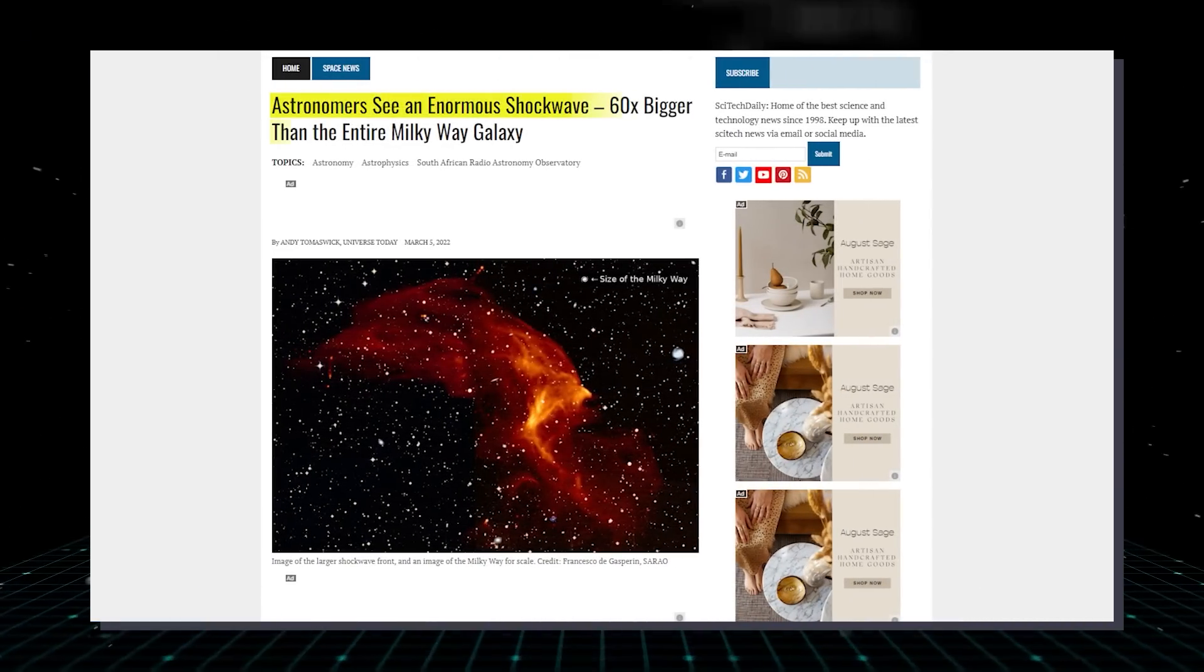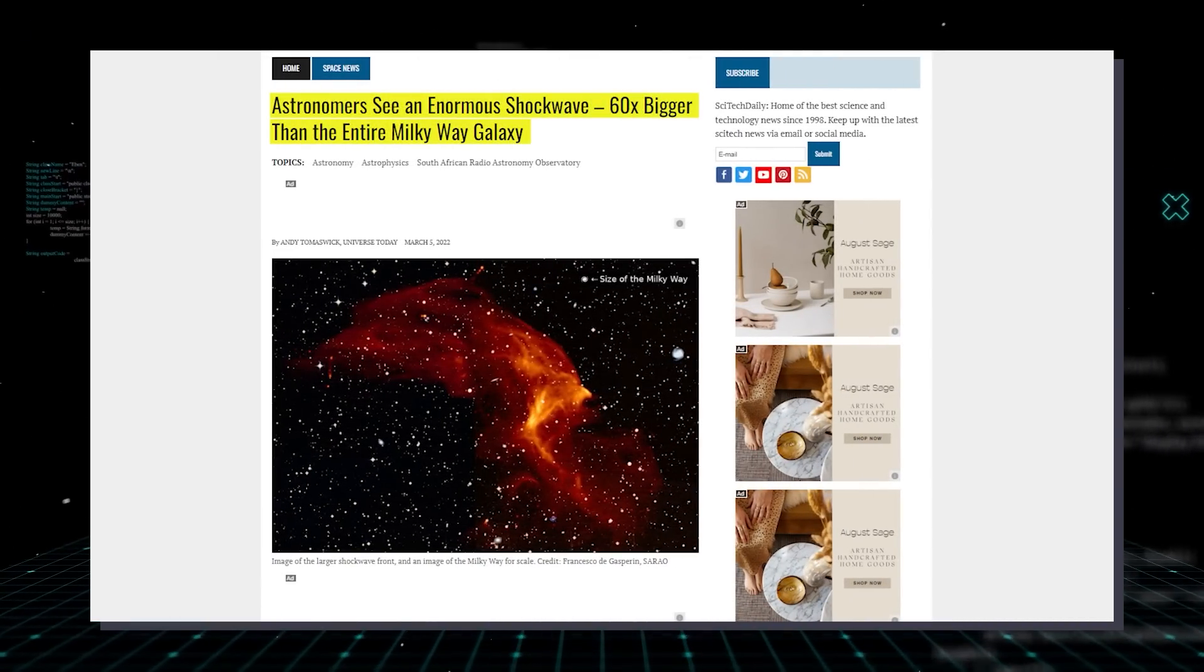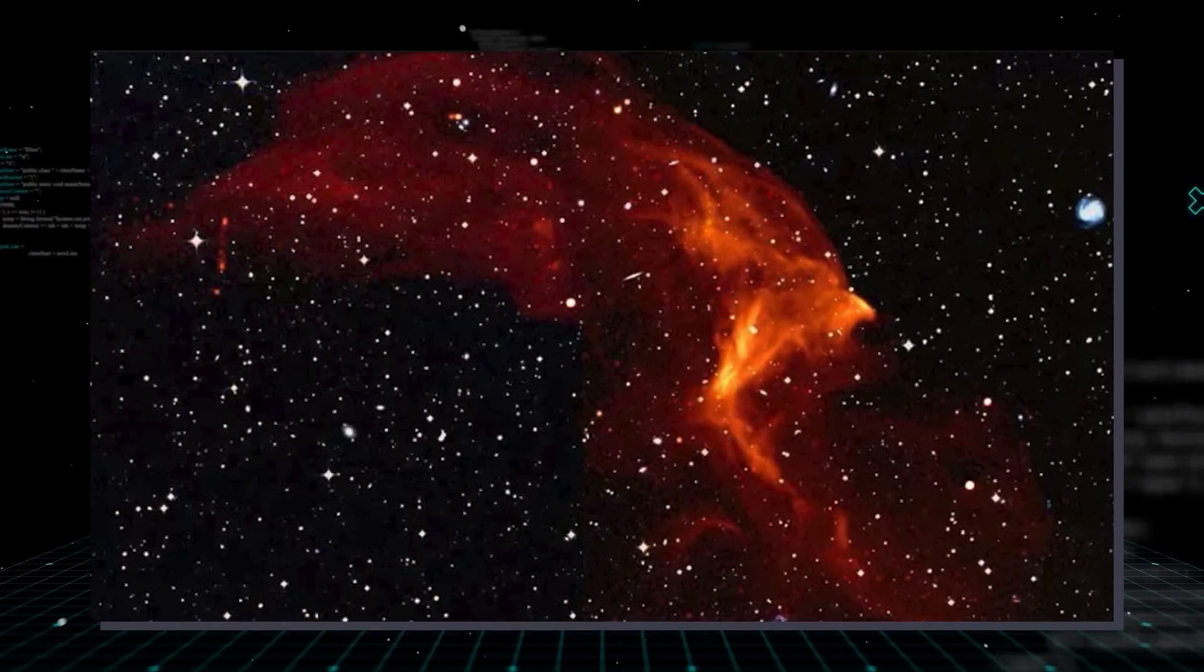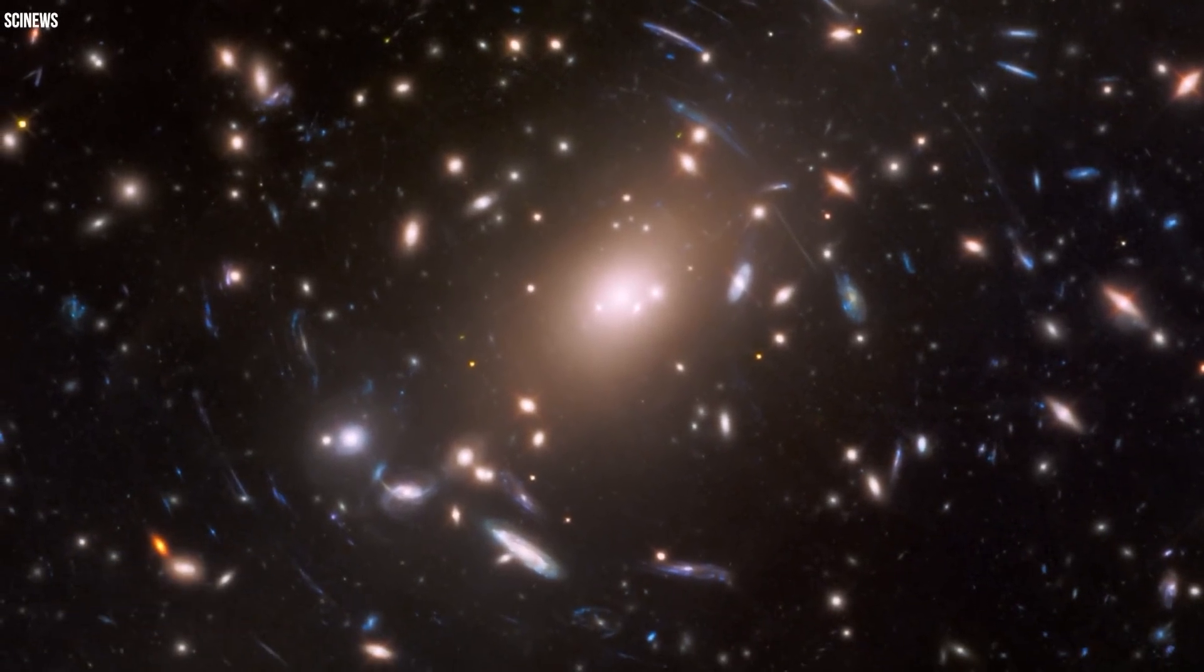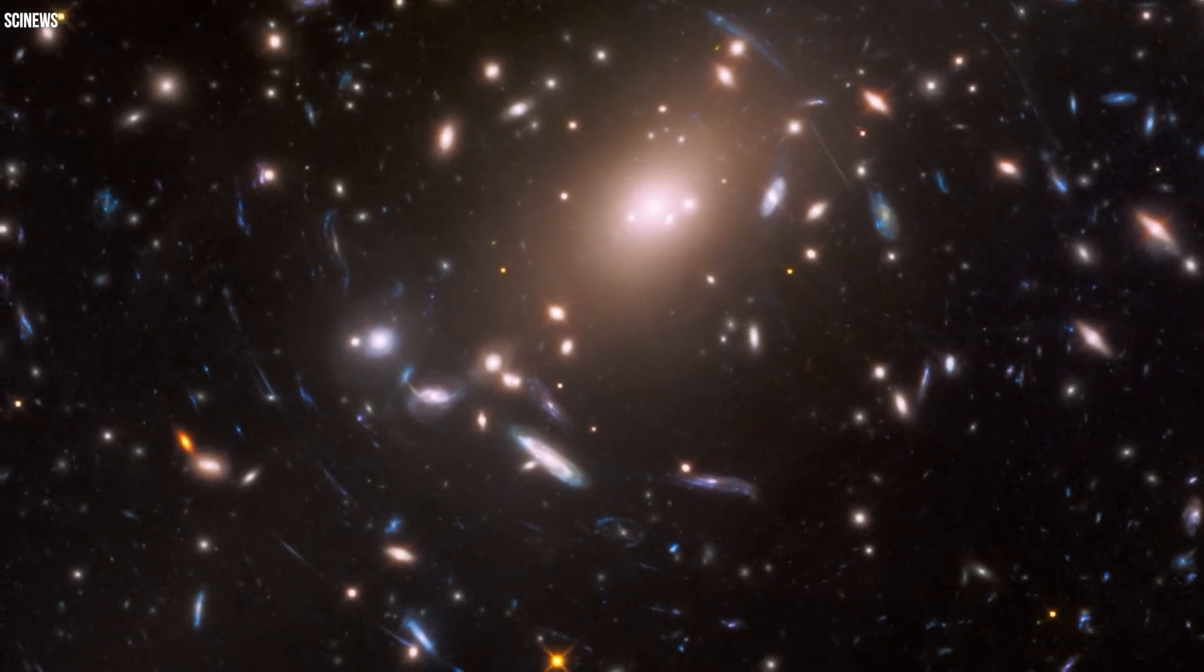In February 2022, a new study was published in the Journal of Astronomy and Astrophysics that presented to the world one of the most detailed pictures ever captured of an enormous shockwave. ABEL 3667 is the name given to a mesmerizing galaxy cluster.